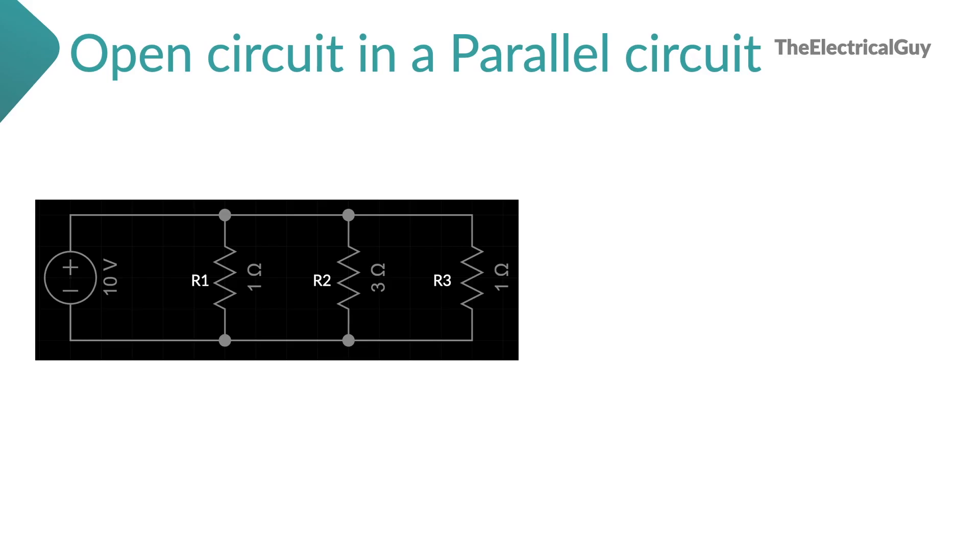Consider simple parallel circuit shown. Now let's say there is an open circuit at R3. Now what will be the current and voltage in this circuit? As this is a parallel circuit, current flowing through R1 and R2 will be normal. Voltage across these resistors will also be normal, it will not be affected. Current through R3 will be 0.